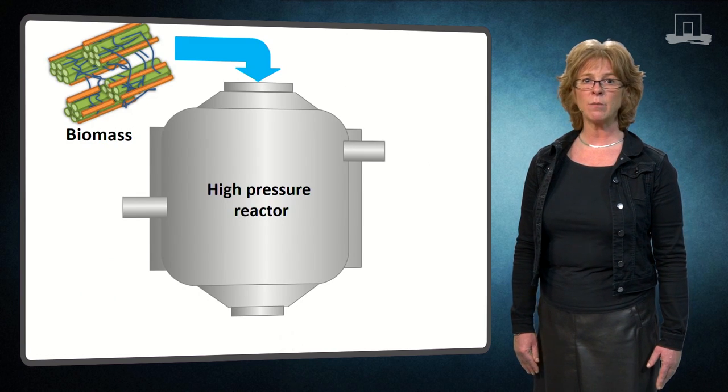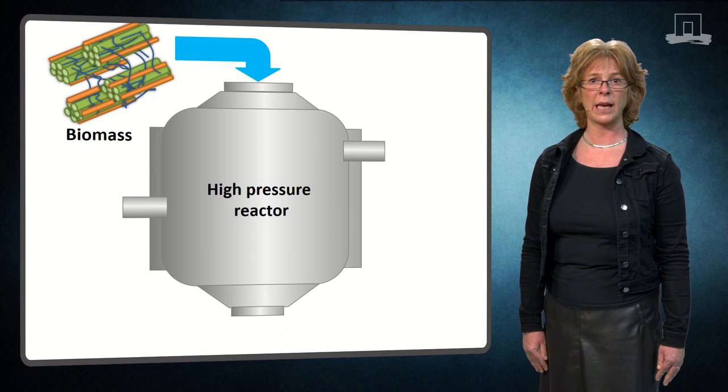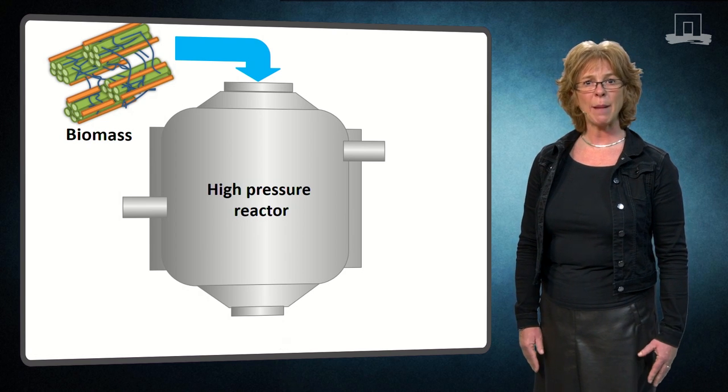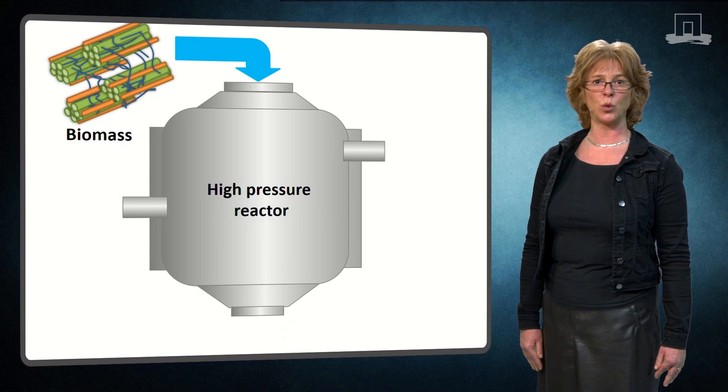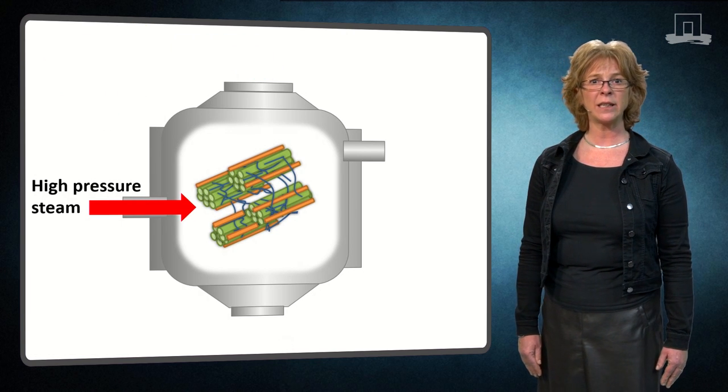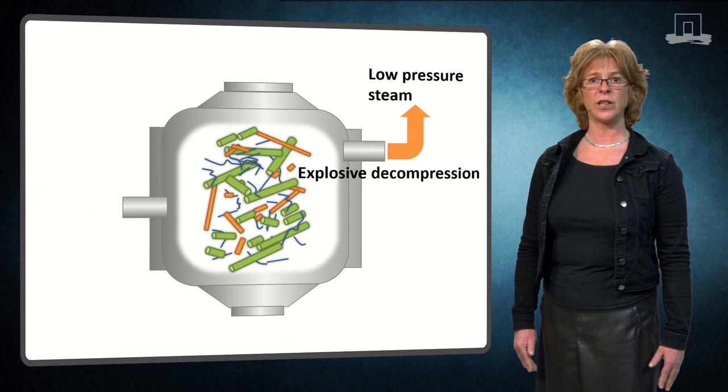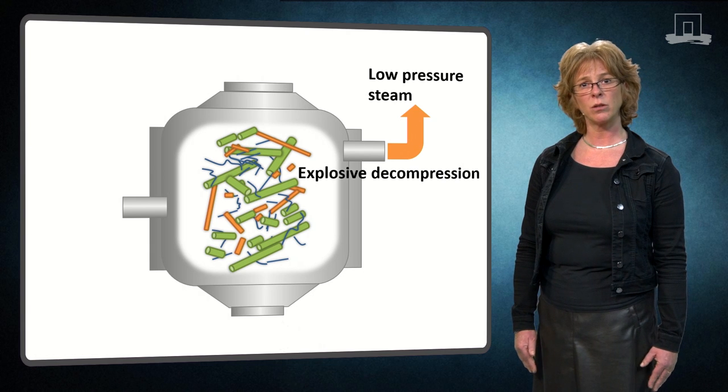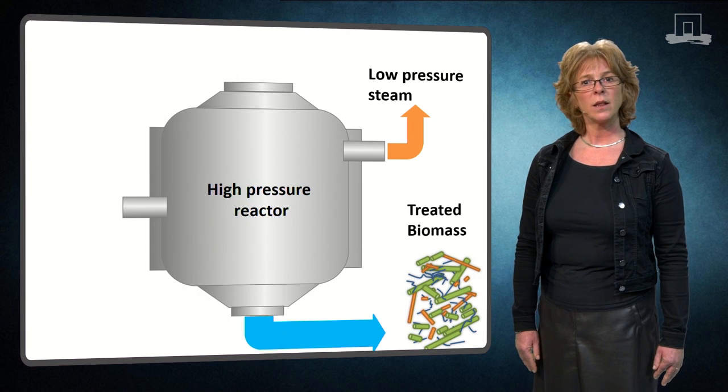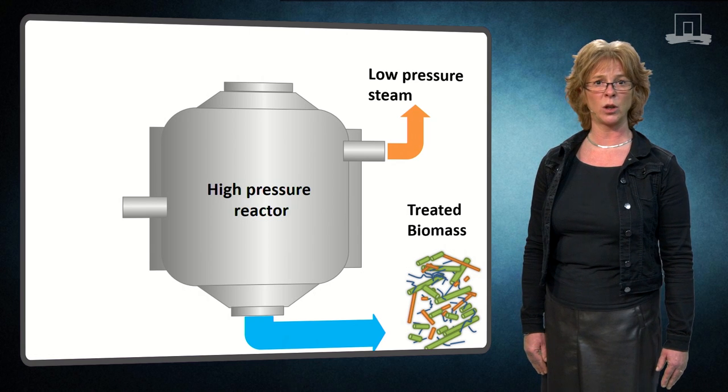In order to overcome some of these issues, a steam explosion pretreatment can be applied. Here, rapid application of steam is used. High-pressure steam is added to the reactor and after a few minutes, the pressure is released and the biomass cooled. This method aims at a fast solubilisation of the hemicellulose.